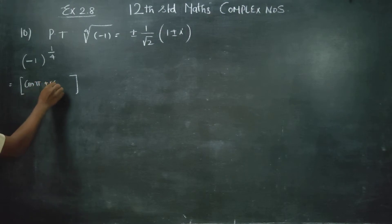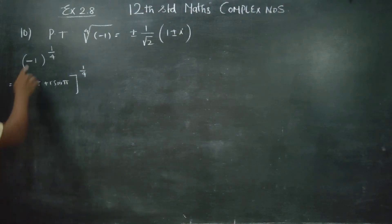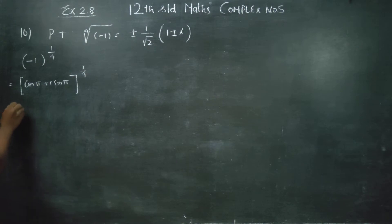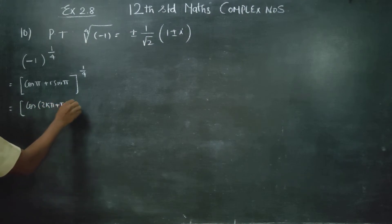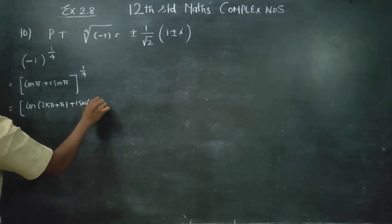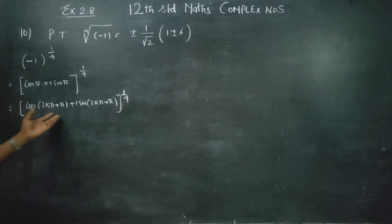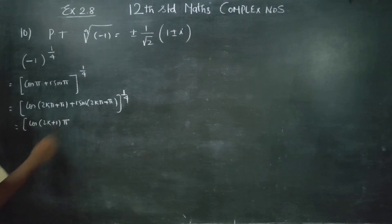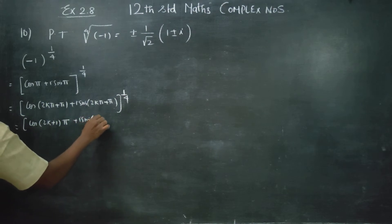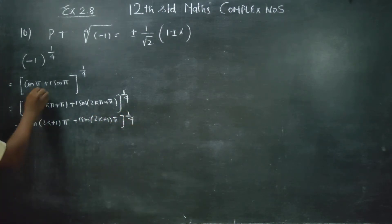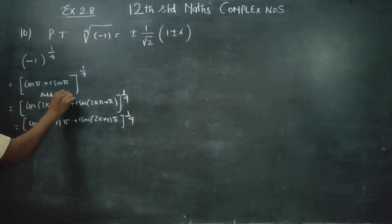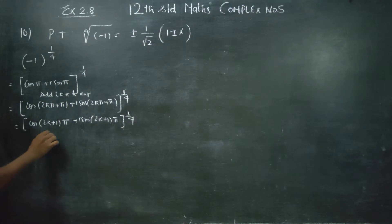Minus 1 in polar form is cos π + i·sin π. So minus 1 to the power 1 by 4 becomes (cos π + i·sin π)^(1/4). Rule number 1: change into polar form. Rule number 2: add 2kπ to the argument. So we get (cos(2kπ + π) + i·sin(2kπ + π))^(1/4). Taking π common: (cos(2k+1)π + i·sin(2k+1)π)^(1/4).